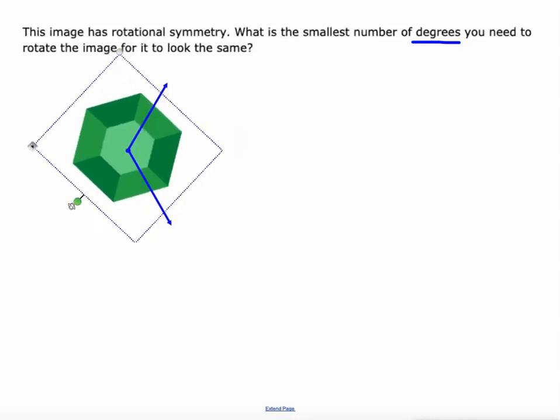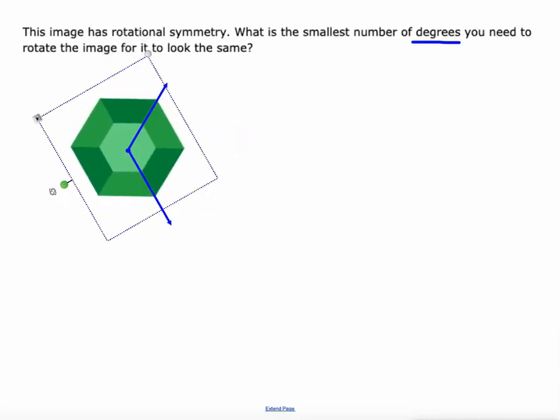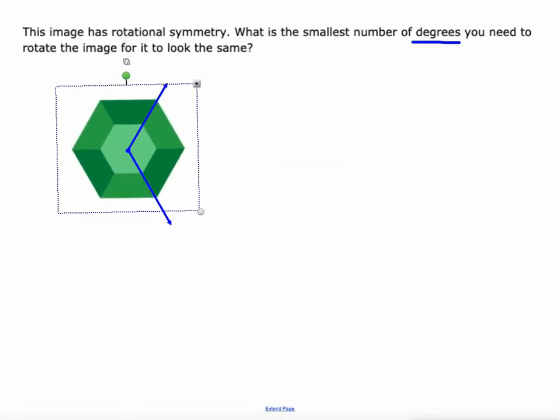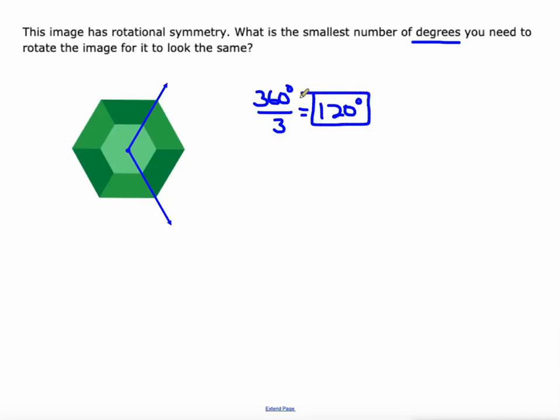Well, again, there's two. We have dark green on top again. And there's three, three times around. So I'm going to do 360 degrees divided by three full rotation, or one third of a rotation is 120 degrees. So it's got 120 degree rotational symmetry.